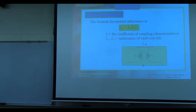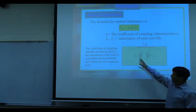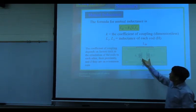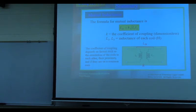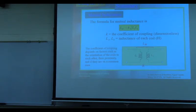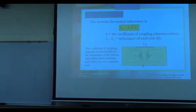If we know L1, L2, and the coupling coefficient K, we can calculate the mutual inductance. The coefficient of coupling depends on factors such as the orientation of the coils — parallel orientation gives better coupling than perpendicular. It also depends on proximity: if the coils are close, coupling is large; if far, coupling is small. And if they share a common core, coupling will be large; without a common core, coupling will be very small.